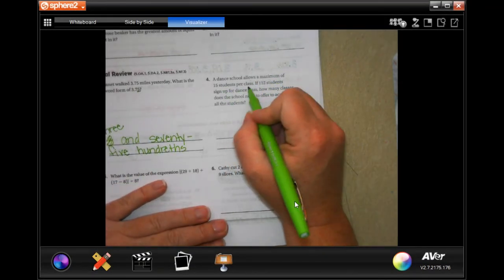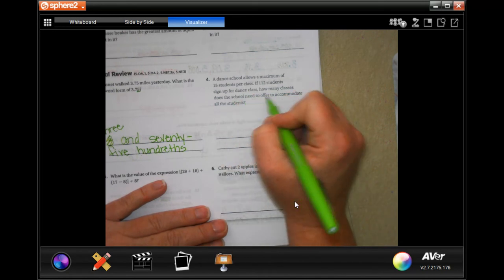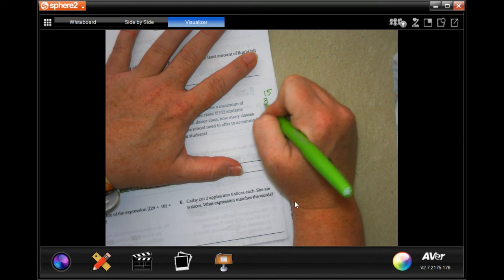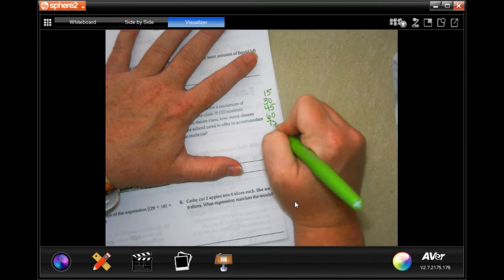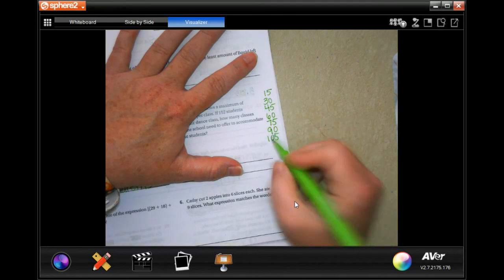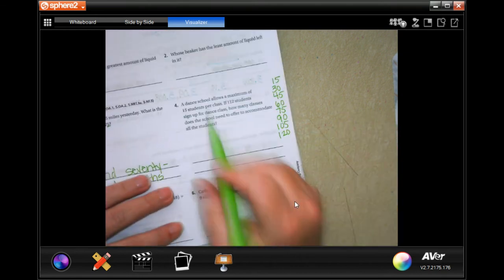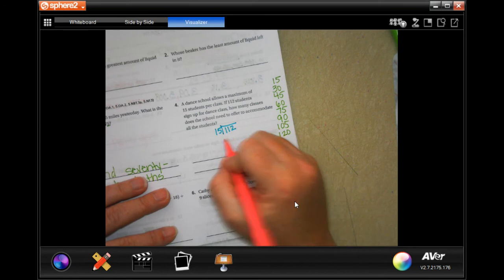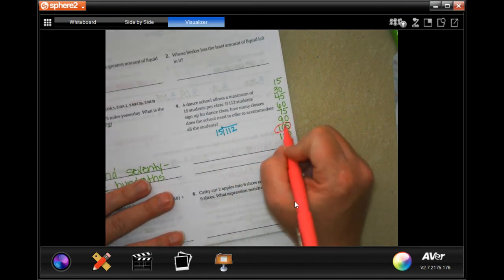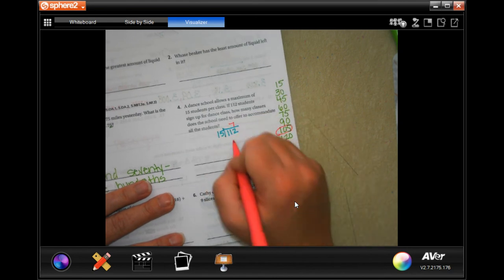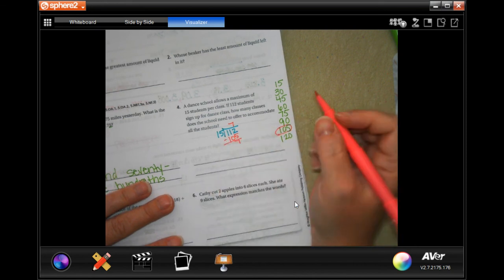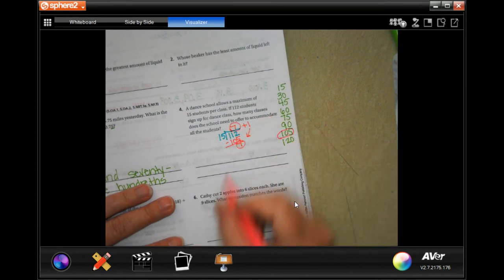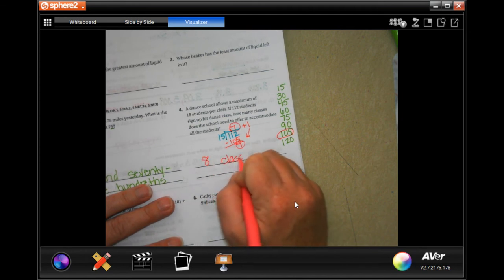A dance school allows a maximum of 15 students per class. If 112 students sign up for a class, how many classes does the school need to offer to accommodate the students? So, I'm going to go over here and I'm going to write down multiples of 15 because I don't know that off the top of my head. When we do this math, it looks like the closest we're going to get is 105 without going over. So, that's 1, 2, 3, 4, 5, 6, 7. 7 times 15 was 105 with 7 left over. Now, that 7 left over, we can't just leave them hanging. So, you need the 7 classes, but you need to add one for that 7. So, you're going to need 8 classes.